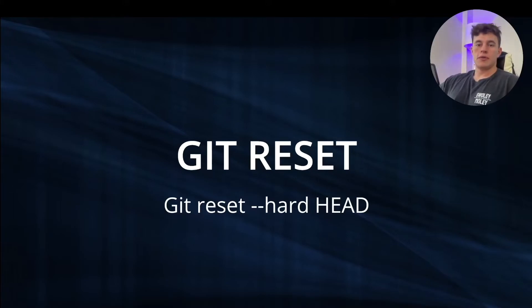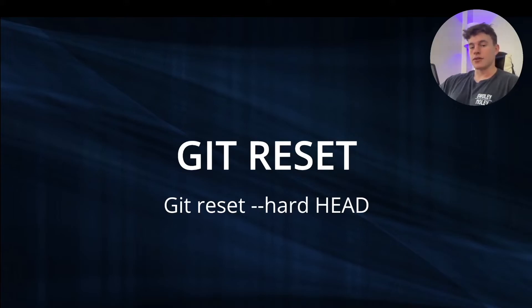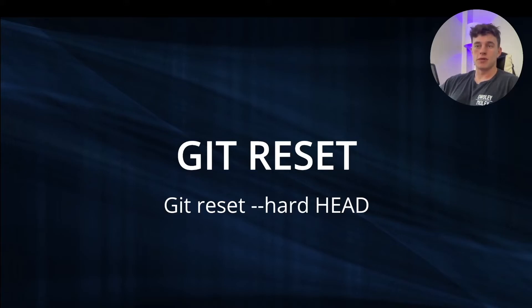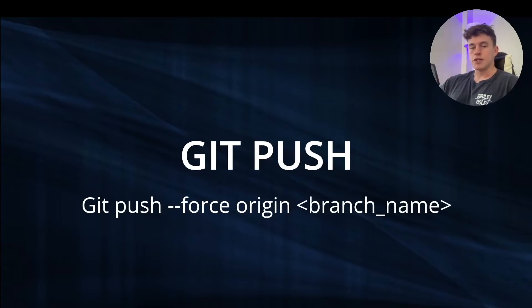Let's say you make a whole lot of commits and in your last one you've totally broken everything and it's too hard to change. A great command to know is git reset. Typing git reset --hard HEAD takes you back to your most recent commit — a good way to jump back a step and start from scratch from that point, without redoing the entire branch.